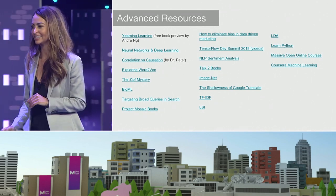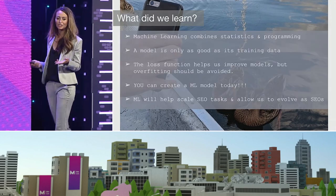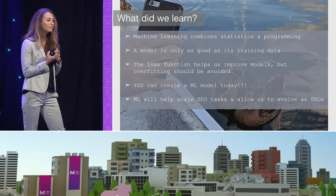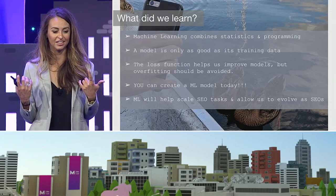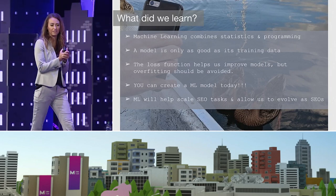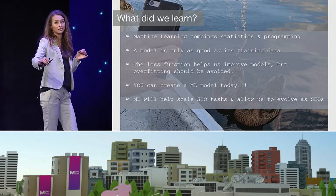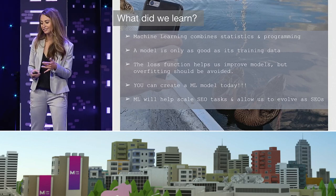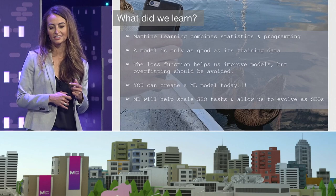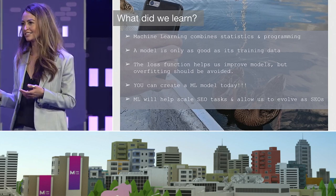What did we learn? Machine learning is just statistics and programming. A model is only as good as its training data, and the loss function helps us improve models — but we don't want to overfit. Every single person in this room can go to Code Labs and create a model today in about 20 minutes. Machine learning is going to help scale SEO tasks and we are going to evolve and work on higher-level thinking.